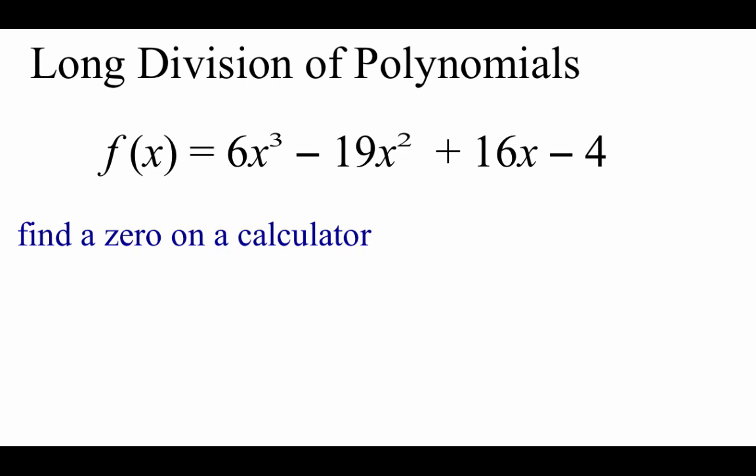Long division with polynomials is going to be really helpful, especially when we're trying to factor out some of these big, long, complicated polynomials to simplify them down or even solve them. So with this one, what I want to do first is I want to go ahead and find a zero using our calculator for this function: 6x cubed minus 19x squared plus 16x minus 4.